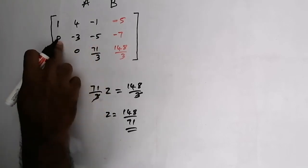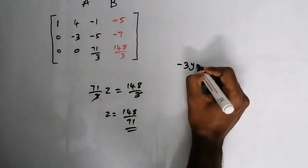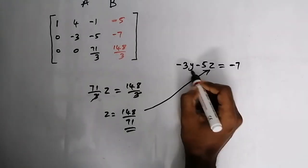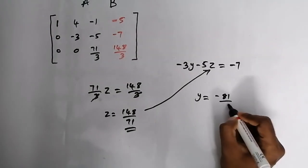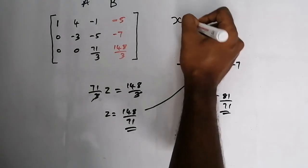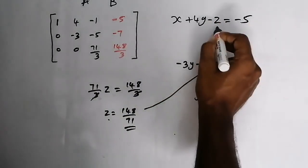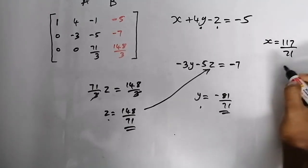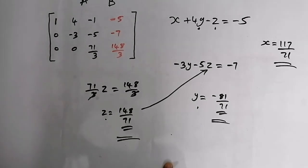In the second equation, x is 0 and y has coefficient minus 3, so minus 3y minus 5z equals minus 7. Substituting the value of z, we find the value of y equals minus 81/71. Then in the first equation, x plus 4y minus z equals minus 5. Substituting the values of y and z, we get x equals 117/71. Thus we have found the values of x, y, and z, solving the system using the Gauss elimination method.